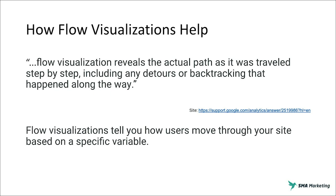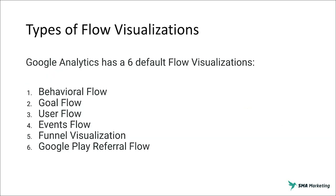Google built these into GA, allowing you to see how users move forward and backwards and what happened along the way. These are very helpful tools to see how your user moved through your site based on a specific variable. Out of the box, Google Analytics has six default visualizations: behavior flow, goal flow, user flow, events flow, funnel visualization, and Google Play referral flow. In this video, we're going to talk specifically about behavior flow and user flow.